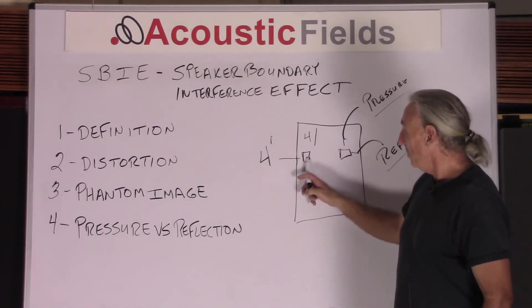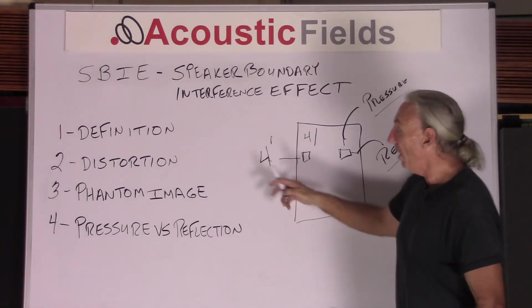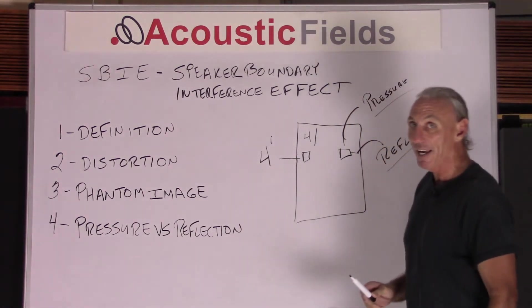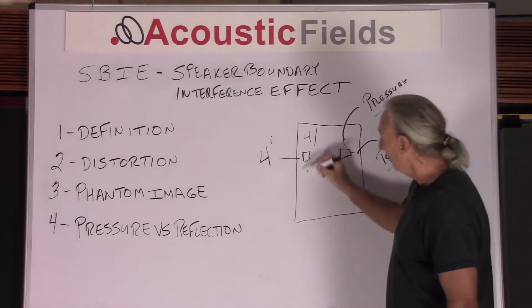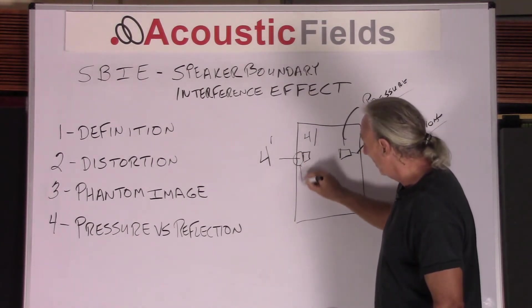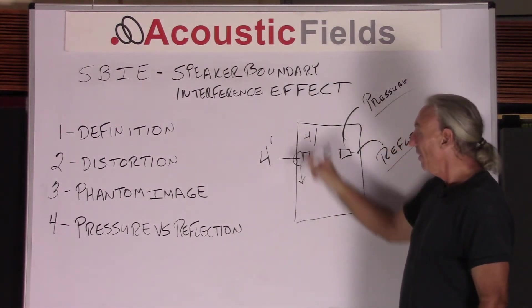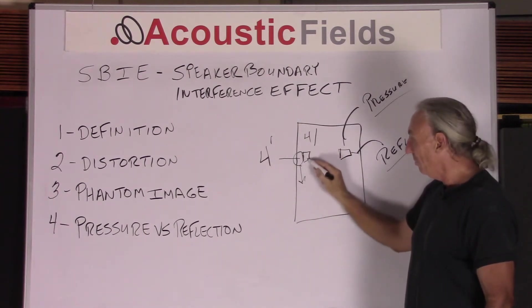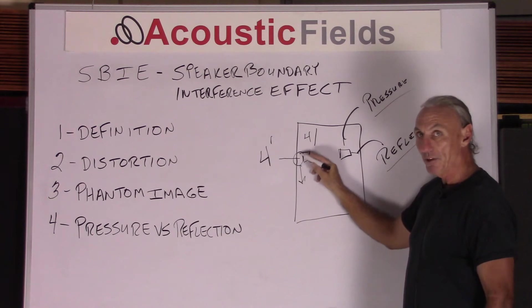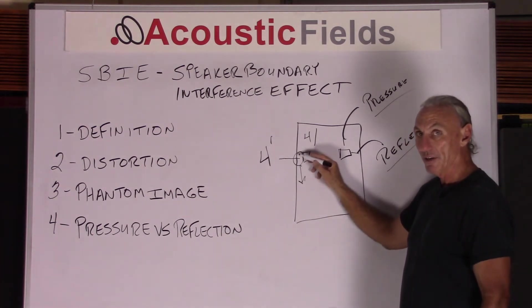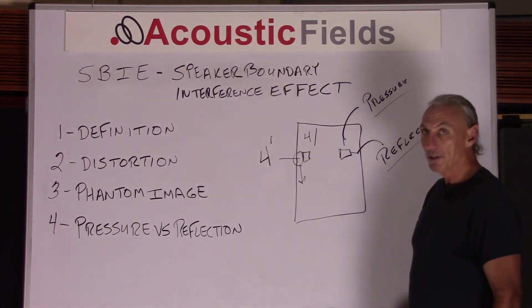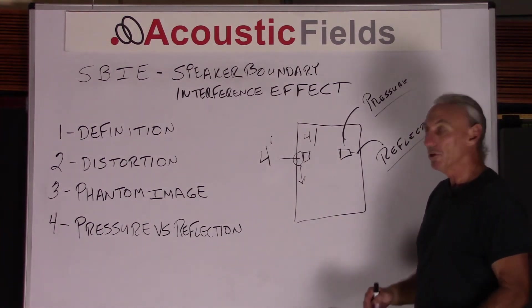So when you move the speaker close to the wall and create SBIE, you negate everything the speaker engineer did to the speaker. You create this area of reflections here or interference boundary effect. You're so close to the boundary that you create higher pressure areas and a comb filtering effect between the speaker and the wall. So you produce distortion.